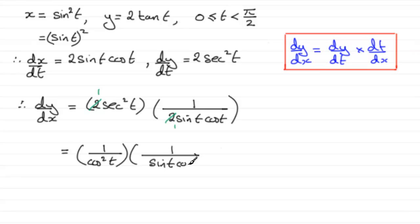So finally, what we get is 1 on the top, all over sine t times cos cubed t. And there you go, that's dy/dx.